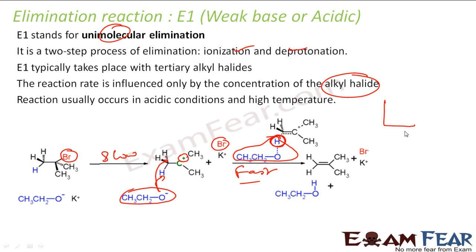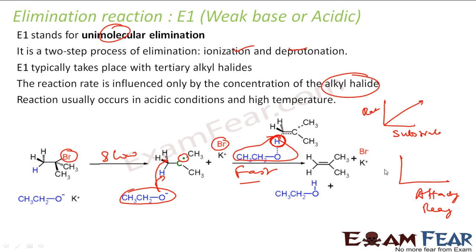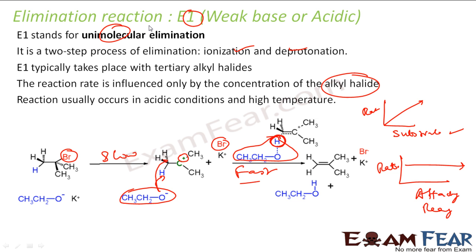Experimentally, increasing the concentration of the substrate increases the rate, but increasing the concentration of the attacking reagent keeps the rate the same. This confirms that the rate depends only on substrate concentration. E1 typically uses a weak base, which grabs the hydrogen from the carbocation intermediate to complete the reaction.